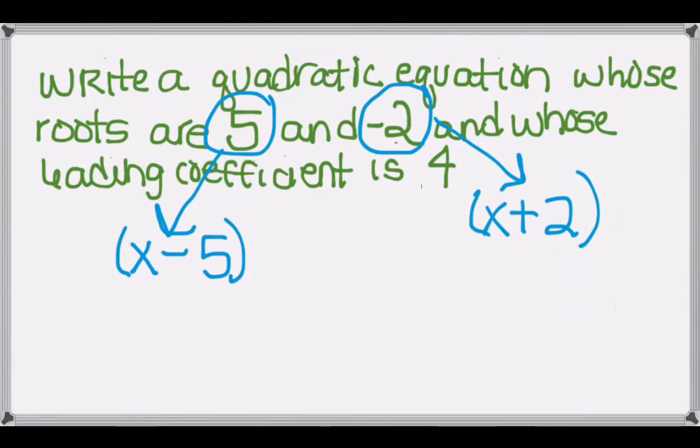To summarize then, you know that if you have a root, the factor is always written with the opposite sign. So if you have a root of plus 5, that means the factor is written as x minus 5. If you have a root of negative 2, the factor is written as x plus 2.